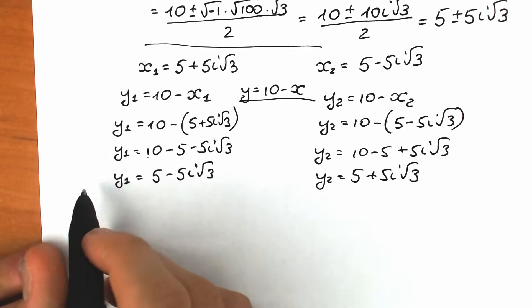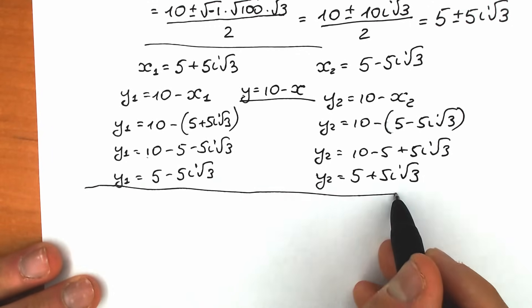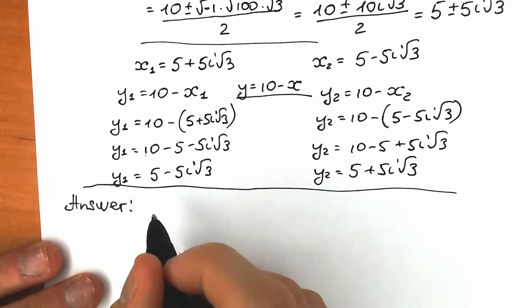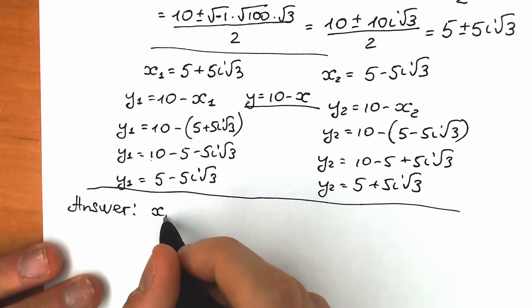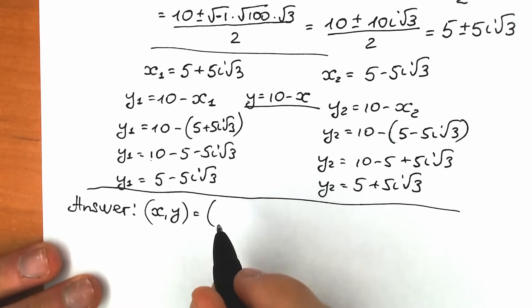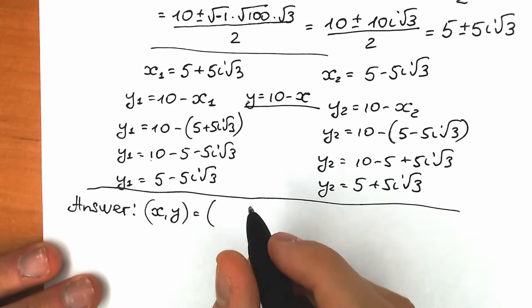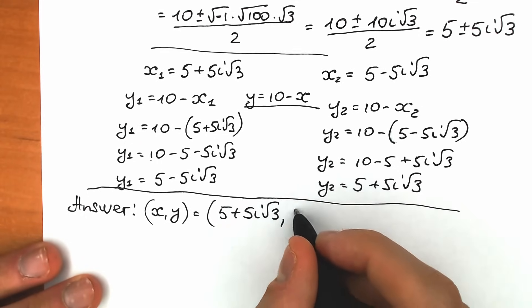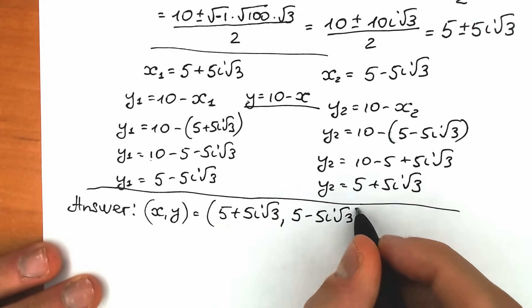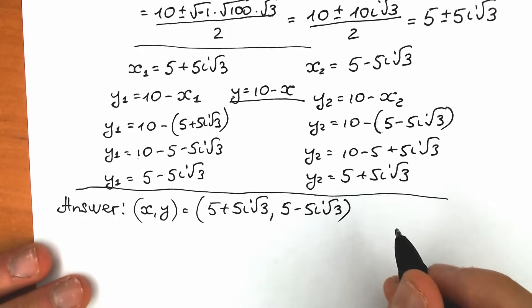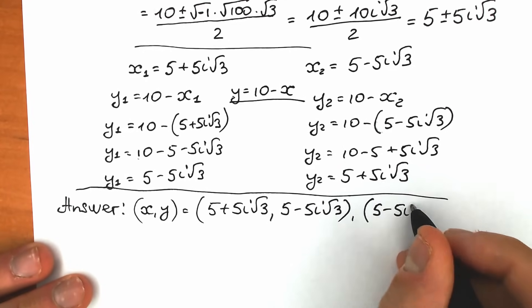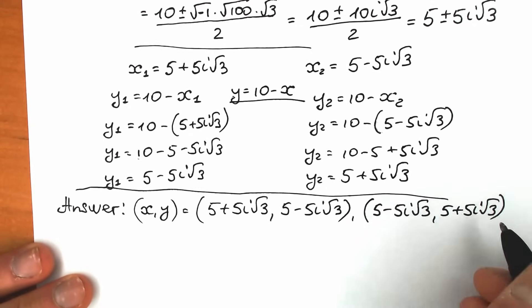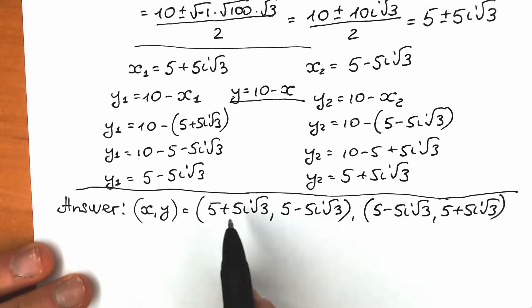Let's write our answer. We have two pairs: the first pair is x₁ = 5 + 5i√3 and y₁ = 5 − 5i√3; the second pair is x₂ = 5 − 5i√3 and y₂ = 5 + 5i√3. Now let's verify our solution.